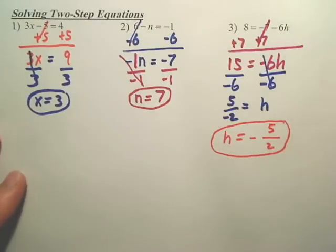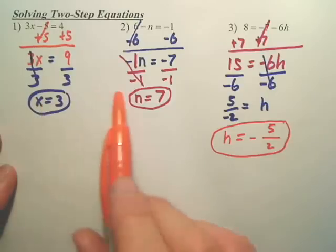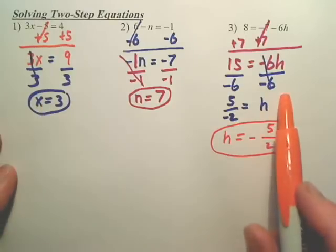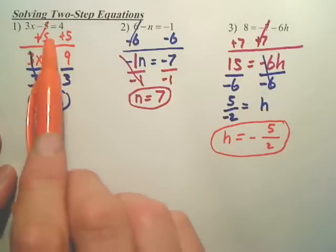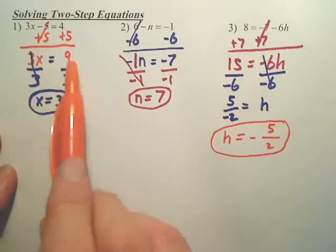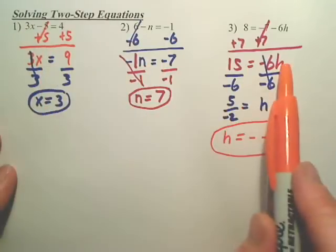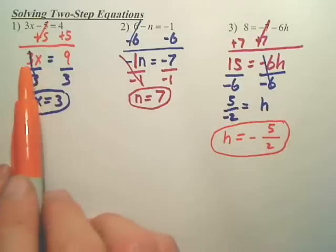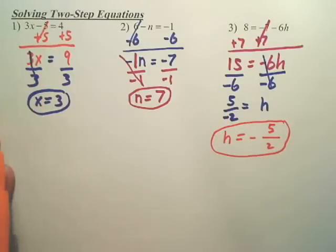If you plug this back in, you should get a true statement. So, again, to solve these, two steps. The first step is to get the variable by itself. The second step is to get the number off the variable. That's solving two-step.